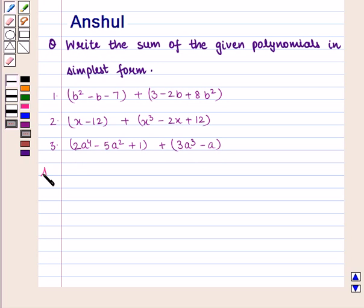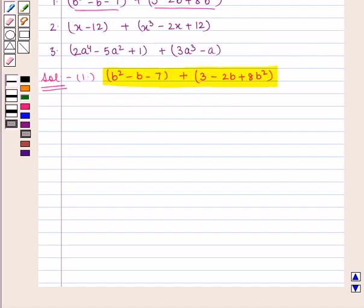Now let us start with the solution. In the first part of the question, we are given two polynomials and we need to find the sum in the simplest form. First, we open the brackets and we get b² - b - 7 + 3 - 2b + 8b².